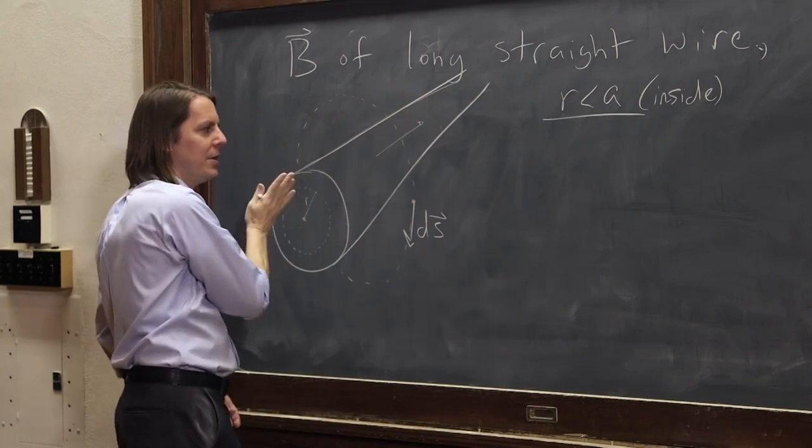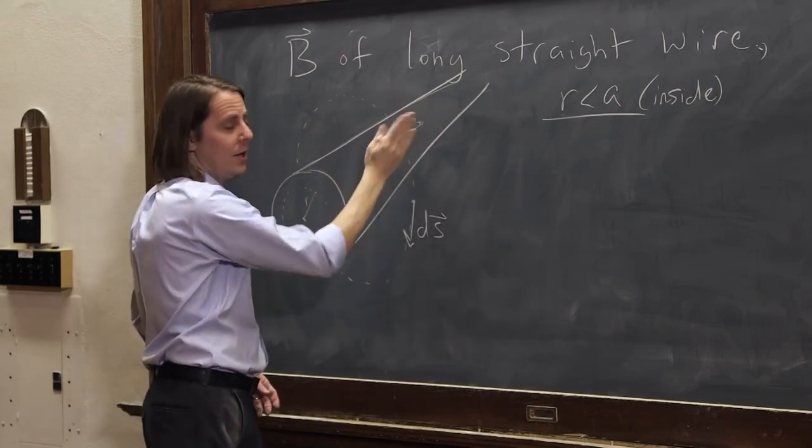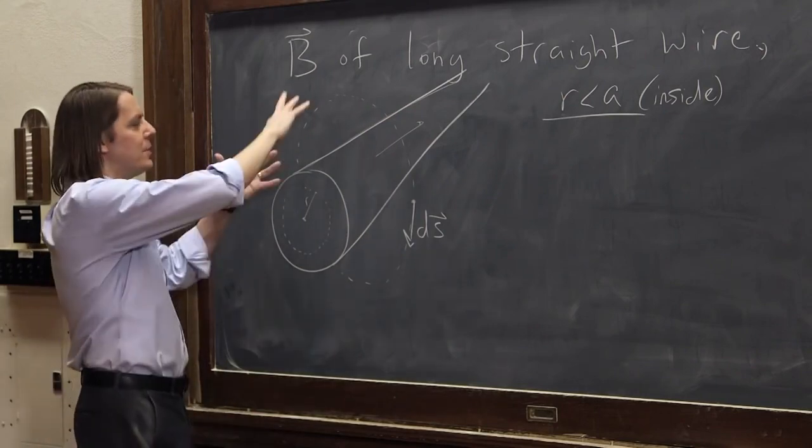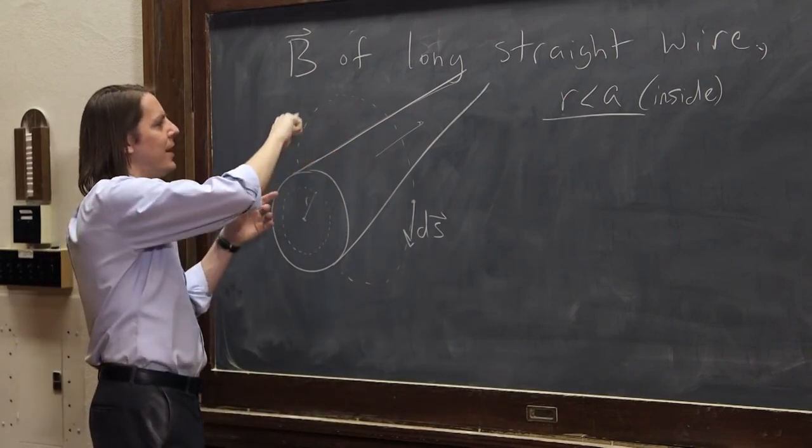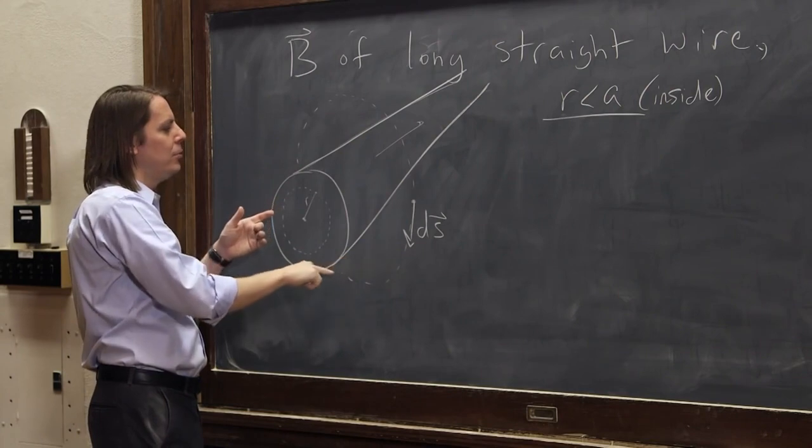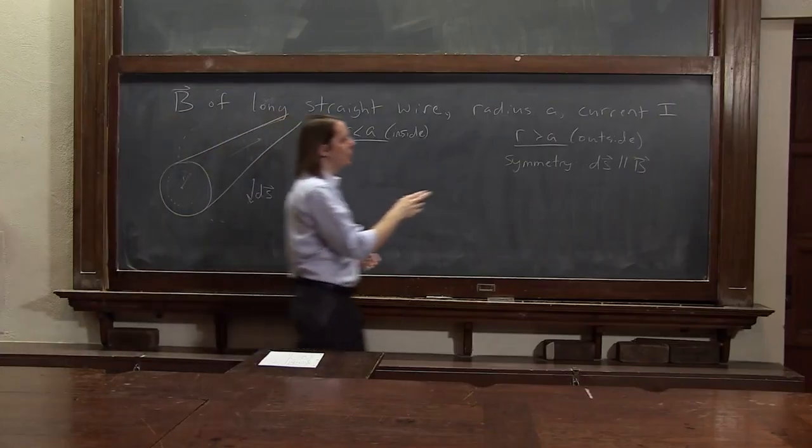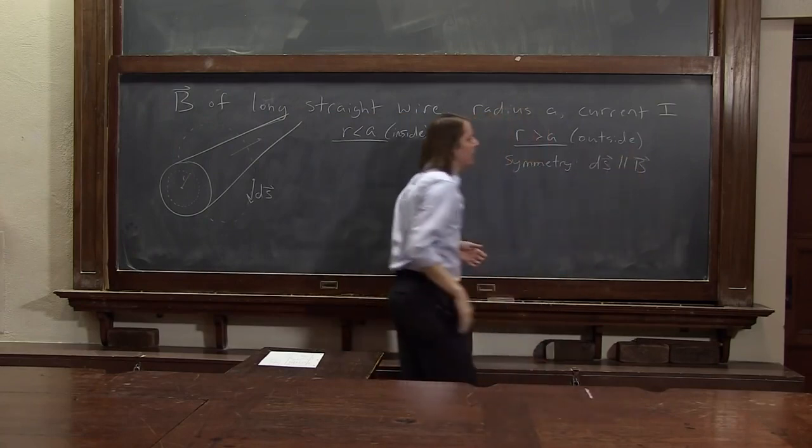It's not a charged rod. It's something carrying current in a specific way. Therefore, this way and that way are now different. But anyway, the symmetry of the situation I'm really referring to is the fact that we have a circular Ampereian loop around a circular wire, and they share the same axis. So the dS will always be parallel to the B field.